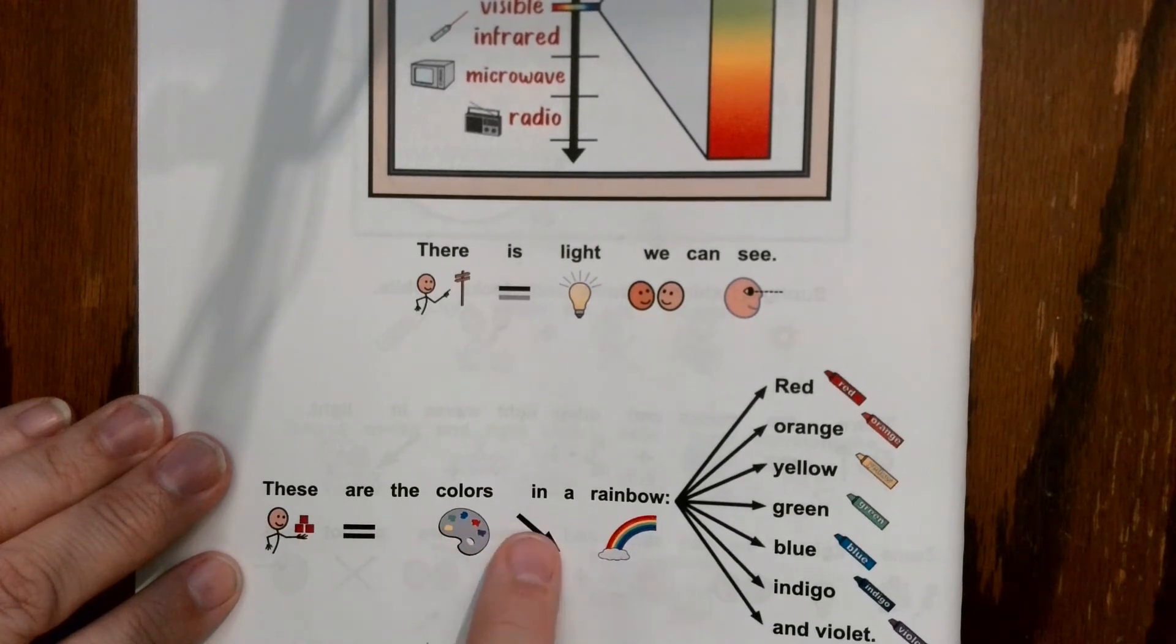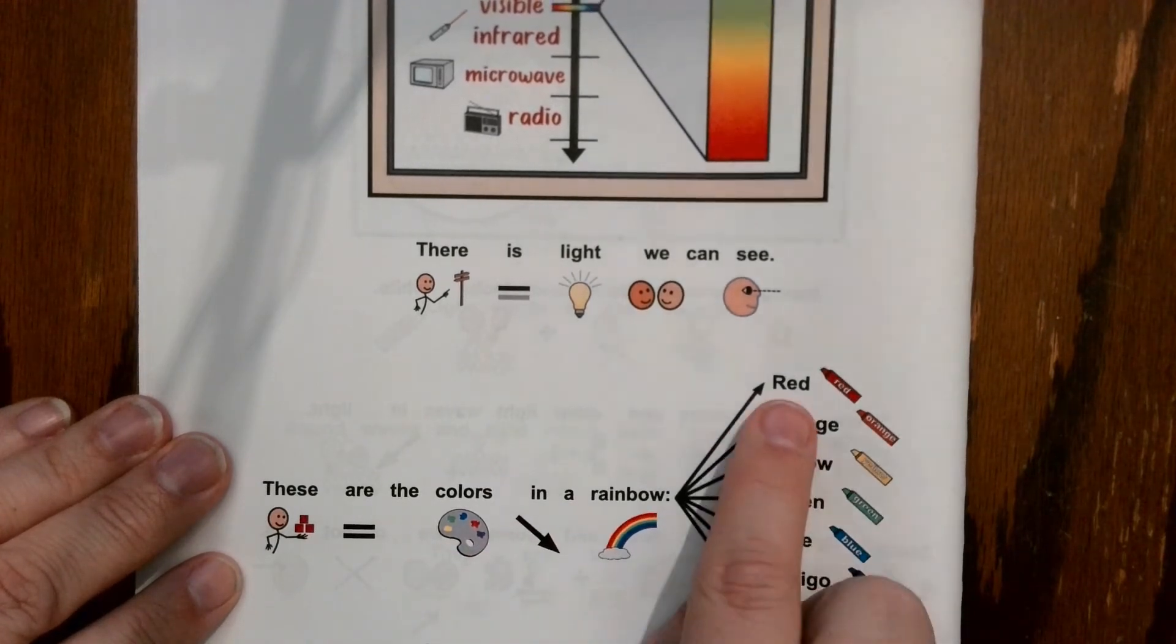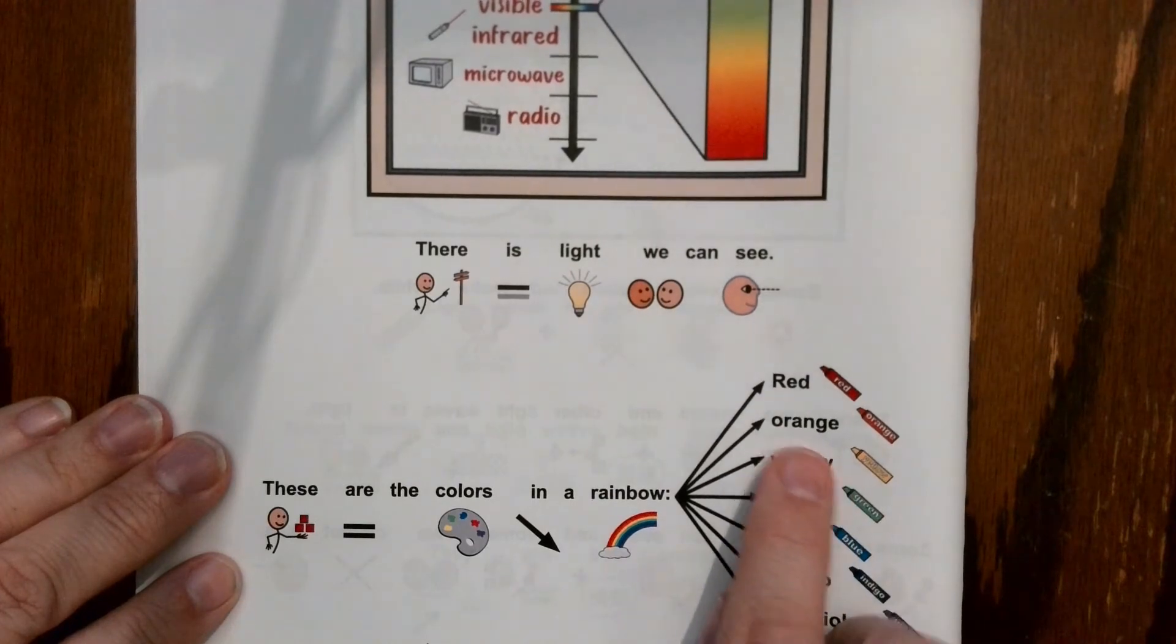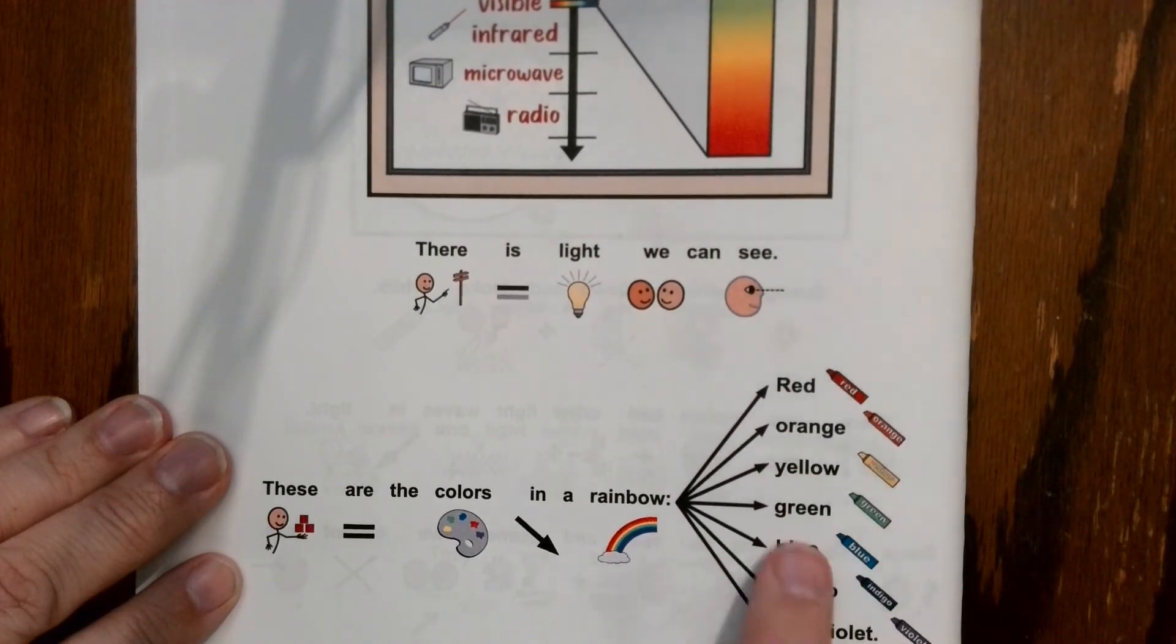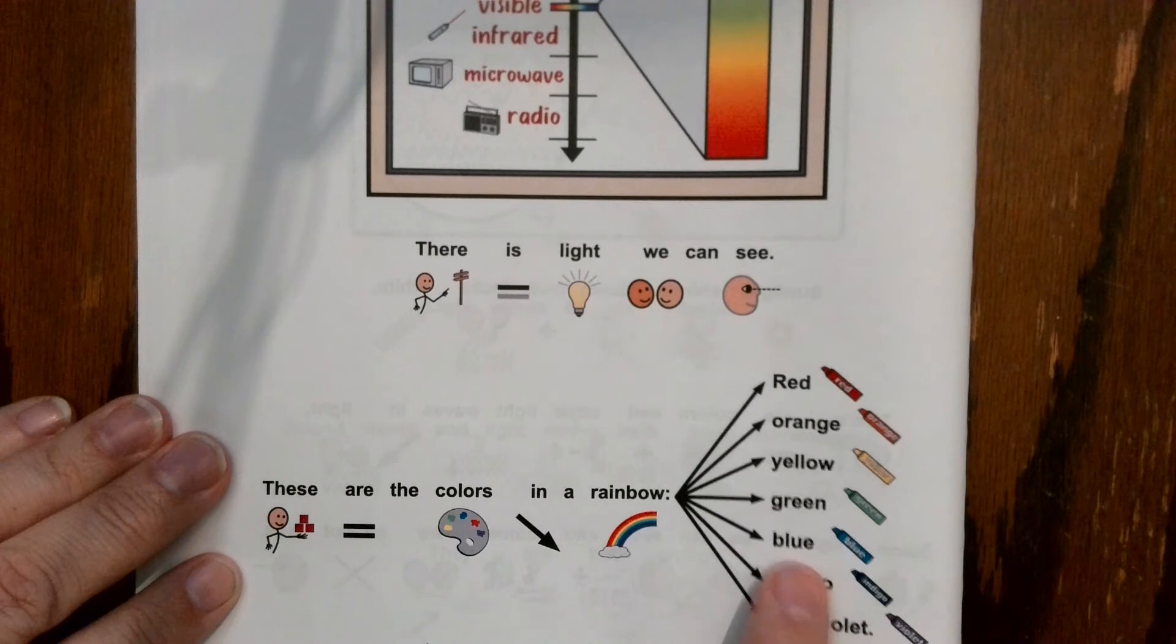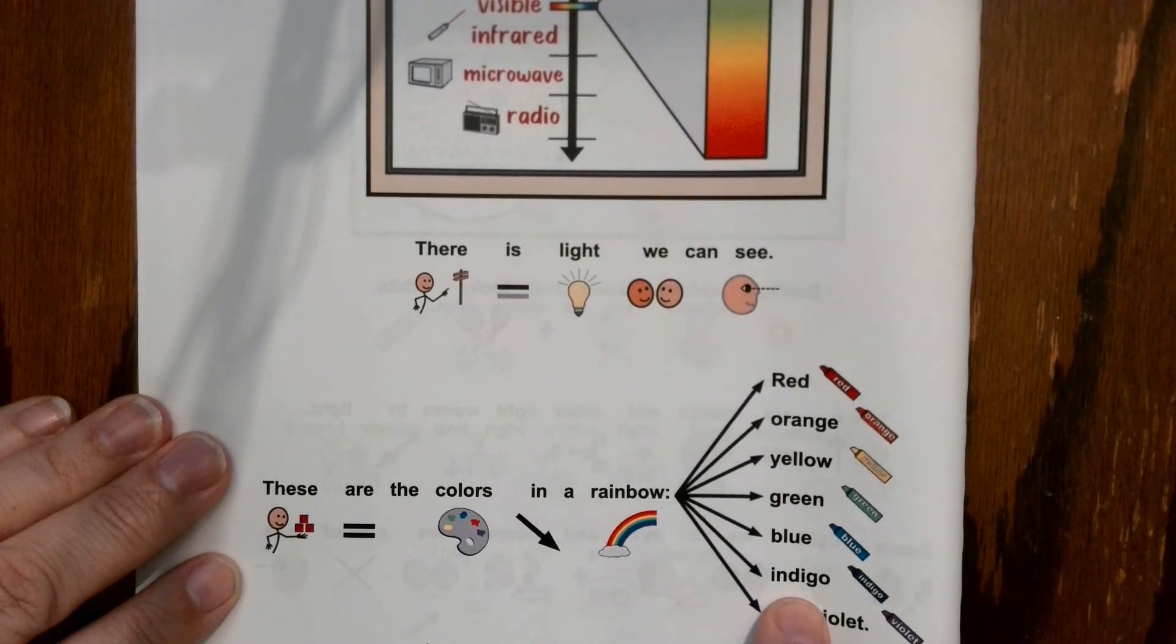Light we can see, these are the colors in a rainbow: red, orange, yellow, green, blue, indigo, and violet.